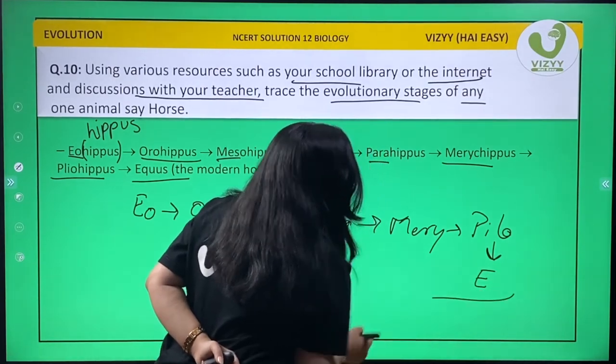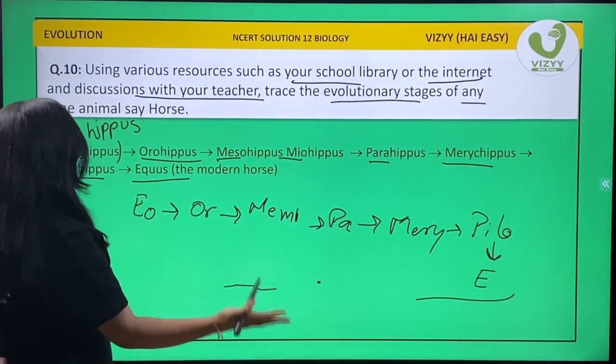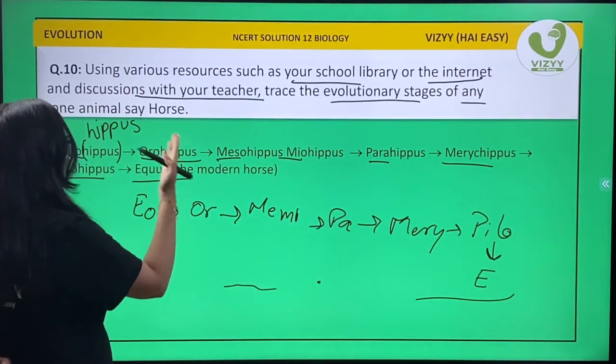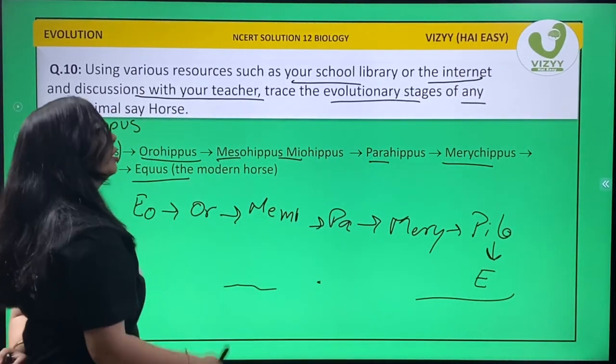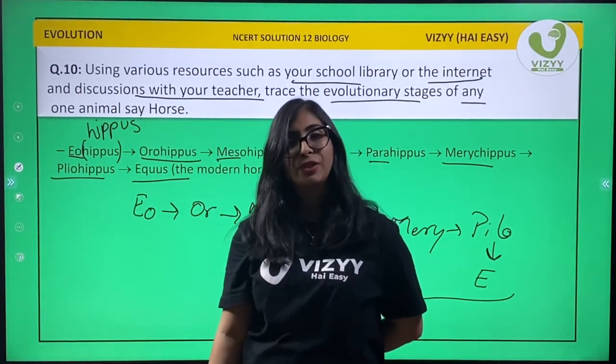So students, here we have gone from dawn horse to modern horse, and by this we come to an end of the chapter. See you in the next chapter.